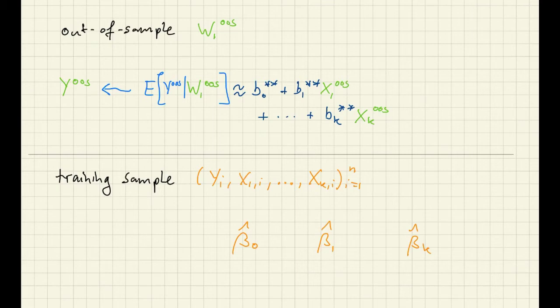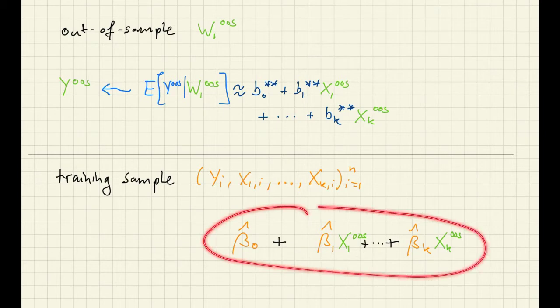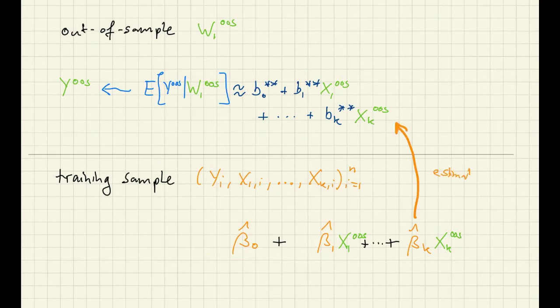And to put together our final prediction, we're combining these OLS estimates with the features that we observe out of sample. Now this expression estimates this. So in the end what we end up doing is we're predicting this observed variable by this expression. And so there's several steps here, and in each of those steps we can make mistakes.